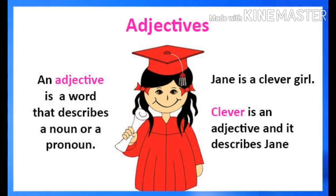An adjective is a word that describes a noun or a pronoun, or we can say it modifies a noun or pronoun. For example, 'Jane is a clever girl.' Clever is an adjective and it describes Jane.